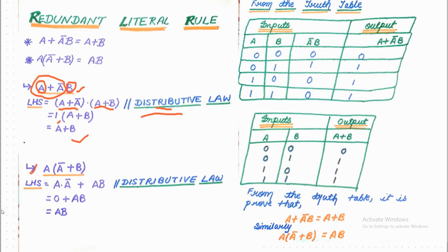Now for the second one: in the LHS we have A into (A-complement plus B). Using the distributive law, this becomes A into A-complement plus A into B. We know A into A-complement equals 0, so we get 0 plus AB, which gives us AB. That proves the RHS.